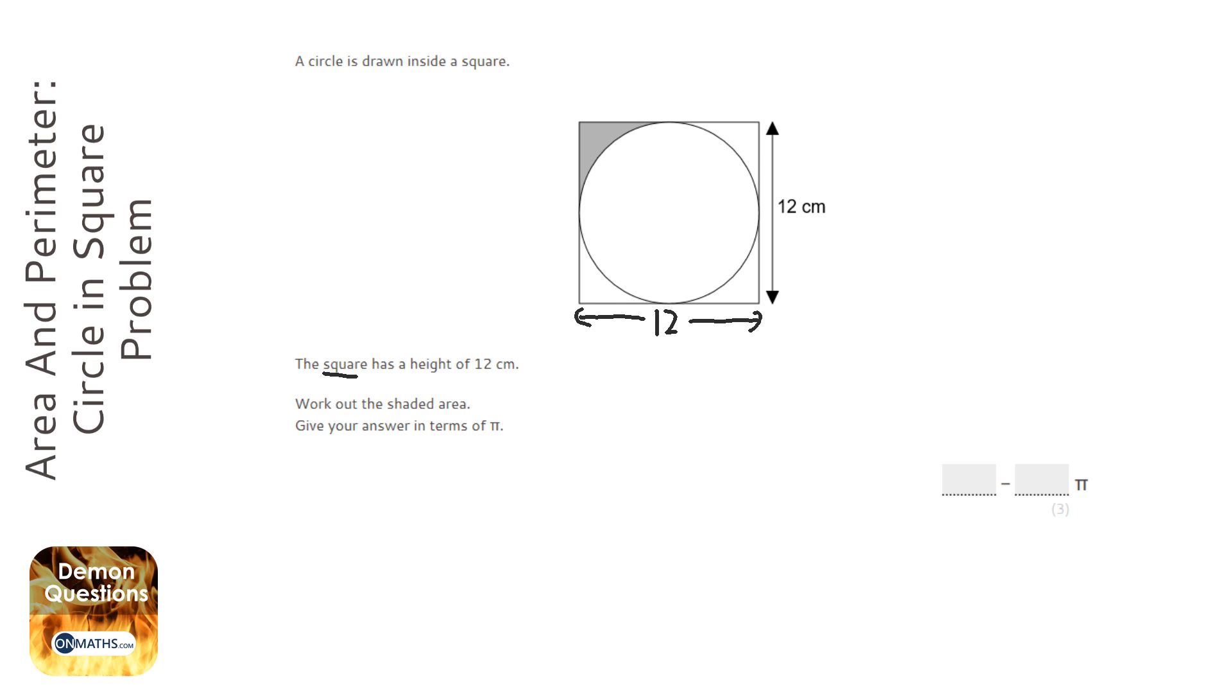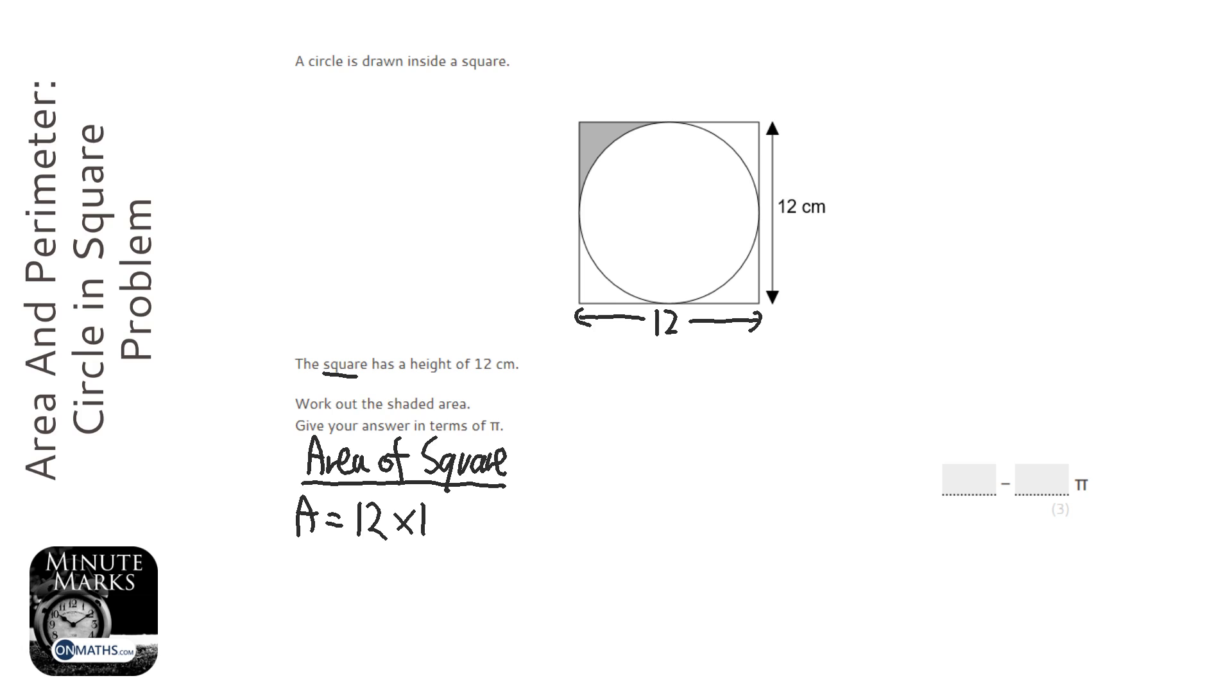The thing we notice is it's like a quarter of the square, but with the circle removed. So the first thing to do is work out the area of the square. The area of the square is going to be quite easy. It's going to be 12 times 12, which is 144 centimeters squared.